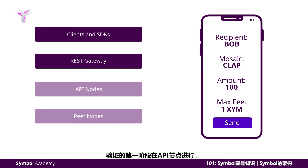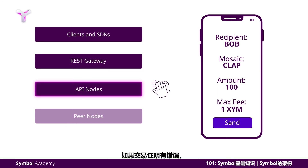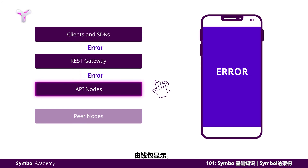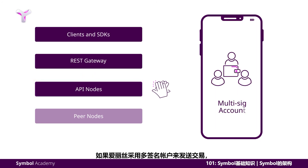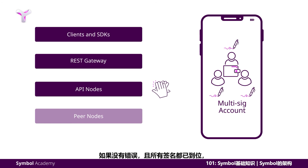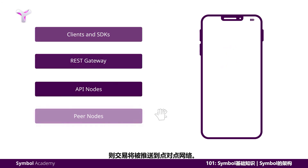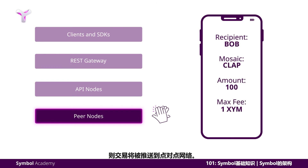The first stage of validation happens in the API nodes. If the transaction proves to have an error, it's communicated to the REST nodes where the WebSocket will send a notification through the status channel and be displayed by the wallet app. If Alice uses a multi-sig account to send the transaction, the API nodes are also responsible for collecting all of the required signatures. If there is no error and all signatures are in place, then the transaction is pushed to the peer-to-peer network. It would be in an unconfirmed status as it has yet to be included in a block and cannot be trusted.